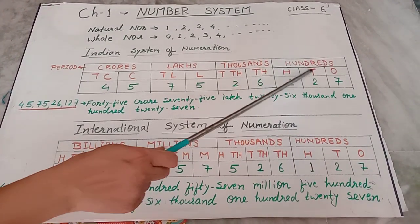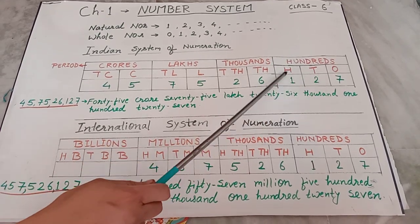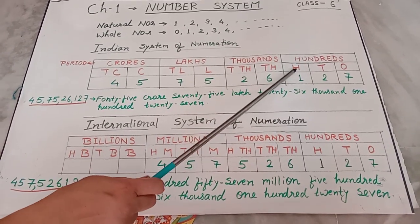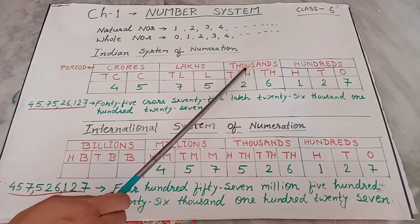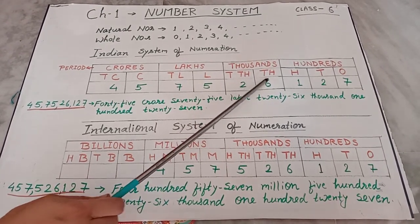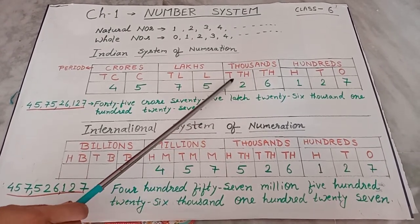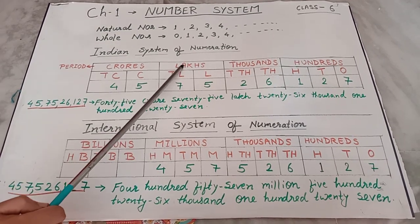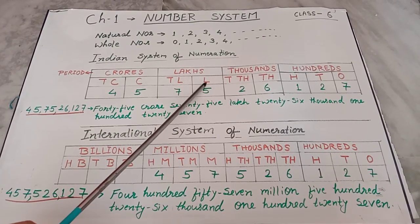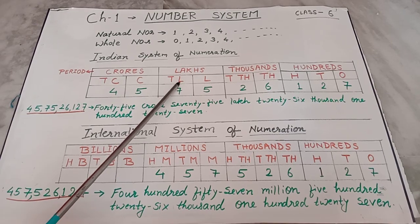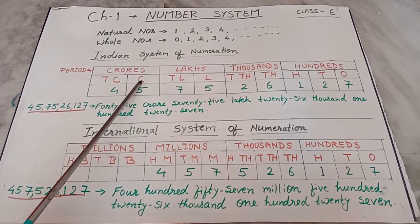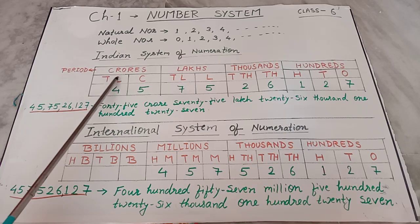The 100s period is divided into three parts: 1s place, 10s place, and 100s place. The 1000s period is divided into two parts: 1000s place and 10,000s place. The lakhs period is also divided into two parts: lakhs and 10 lakhs.